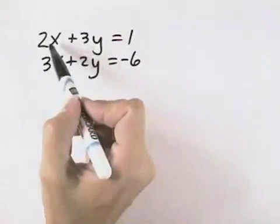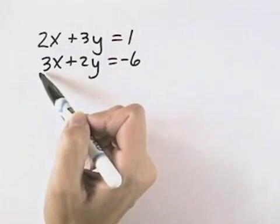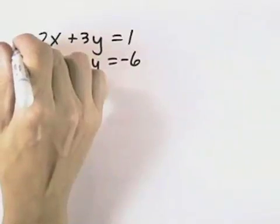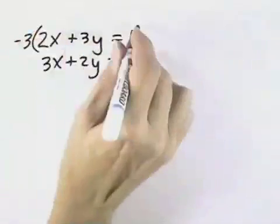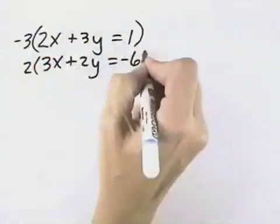I'm going to choose to eliminate the x's by getting a negative 6 in front of my first x and a positive 6 in front of the second, which means I'm going to multiply my top equation all the way across by negative 3. I'm going to multiply my second equation all the way across by positive 2.